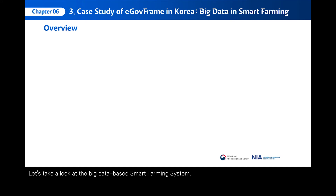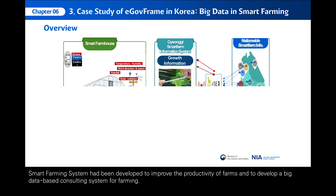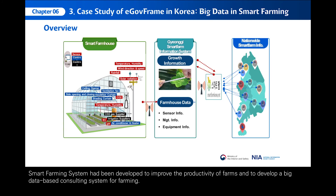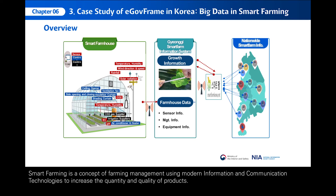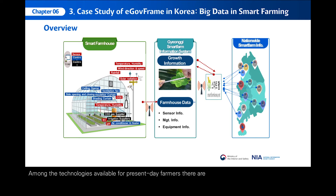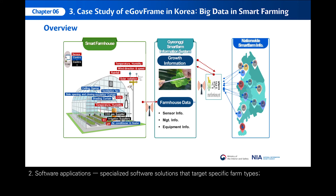Let's take a look at the big data-based smart farming system. The smart farming system had been developed to improve the productivity of farms and to develop a big data-based consulting system for farming. Smart farming is a concept of farming management using modern information and communication technologies to increase the quantity and quality of products. Among the technologies available for present-day farmers there are: sensing technologies including soil scanning, water, light, humidity, and temperature management; software applications — specialized software solutions that target specific farm types.